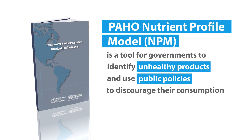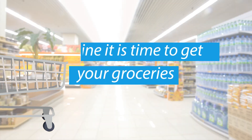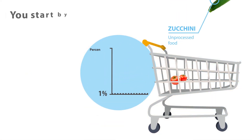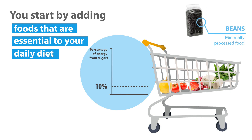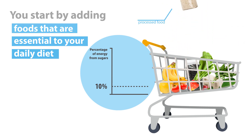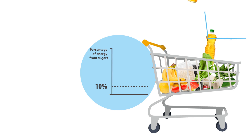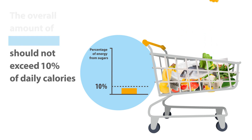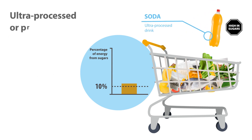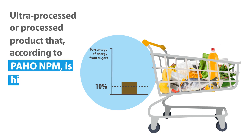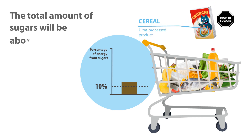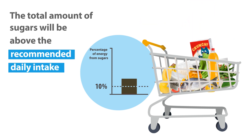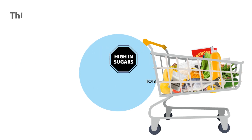use public policies to discourage their consumption. Imagine it's time to get your groceries. You start by adding foods that are essential to your daily diet. The overall amount of free sugars should not exceed 10% of daily calories. But let's say you add an ultra-processed or processed product that, according to the PAHO Nutrient Profile Model, is high in sugars.